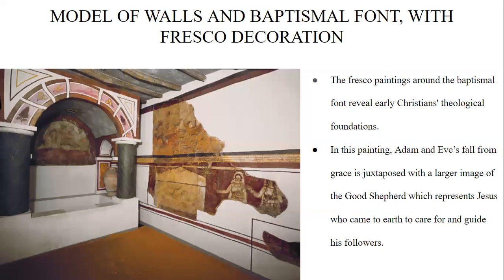Transitioning from Judaism and exploring Christianity, the first Christian artwork we'll look at is the model of a wall and baptismal font with fresco decorations. On one side of the courtyard was a large hall that could seat 60 to 70 people, and next to it was a smaller, extensively decorated chamber with a water tank reserved for baptism — the central rite of Christian initiation. The fresco paintings around the baptismal font reveal early Christian theological foundations. Adam and Eve's fall from grace is juxtaposed with a larger image of the Good Shepherd, representing Jesus, who came to care for and guide his followers. The choice of imagery reinforces the transformative power of baptism, symbolizing the believer's rebirth into a new life in Christ.